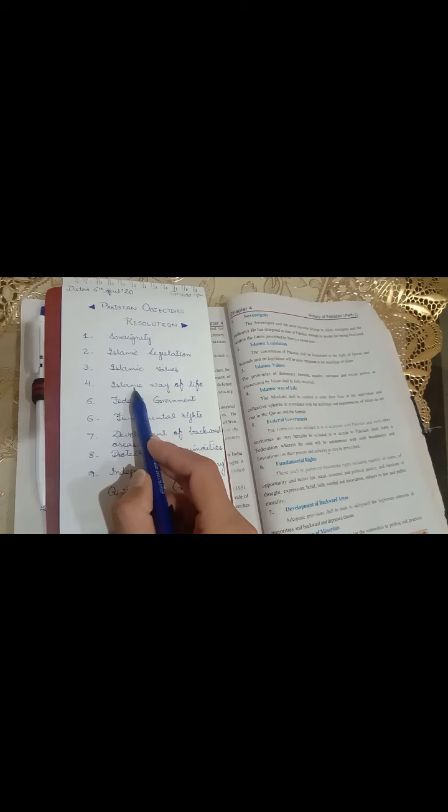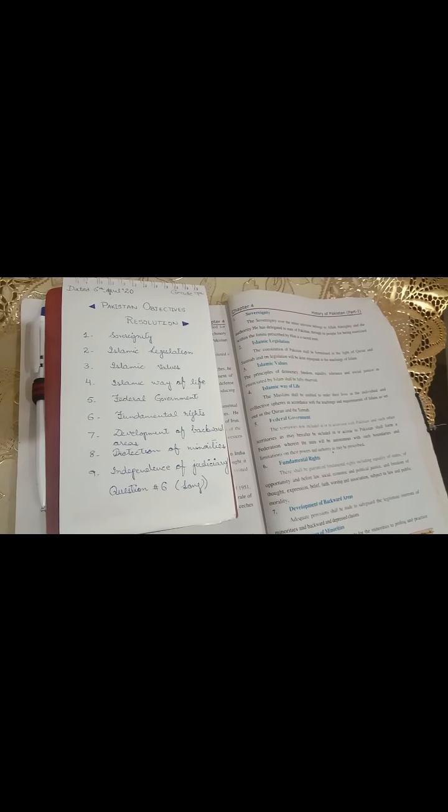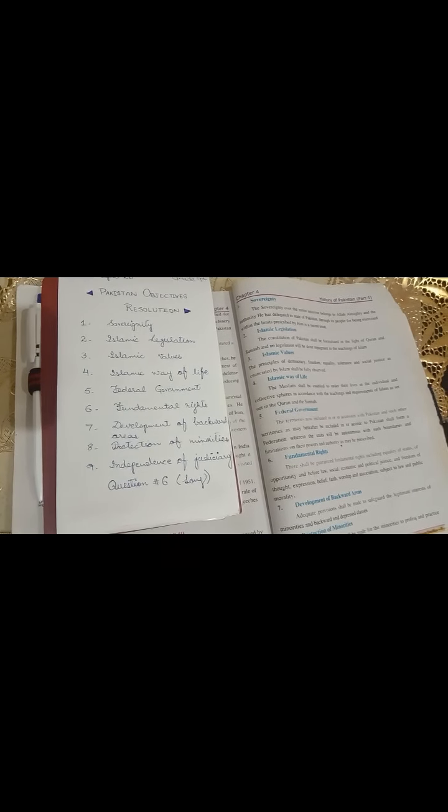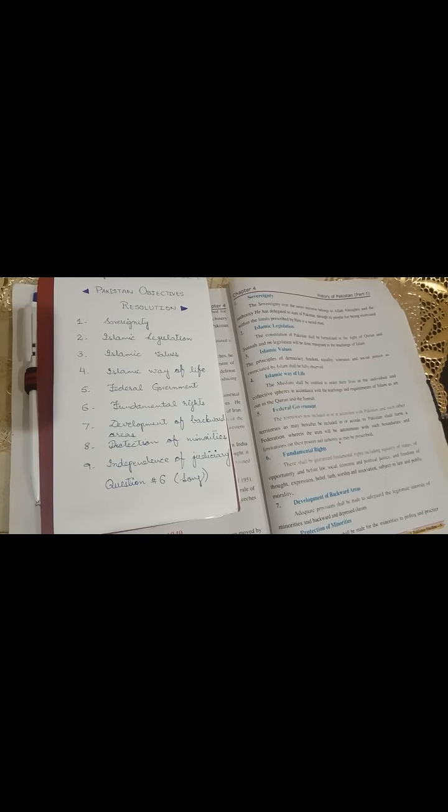Fourth point is Islamic way of life کہ جو constitution ہم بنائیں گے ہم اس میں اس بات کا دھیان رکھیں گے کہ جو لوگ ہیں وہ اسلامی طریقے سے اپنی زندگی کو گزاریں